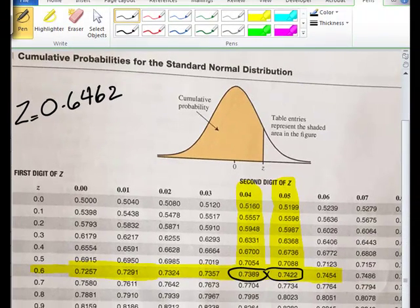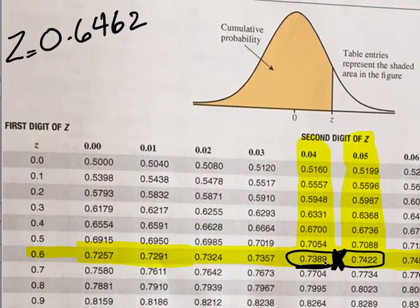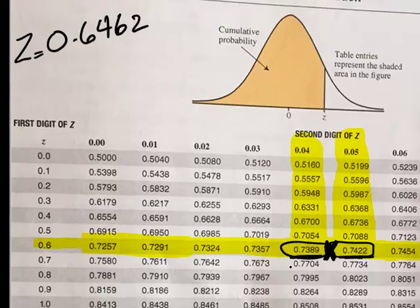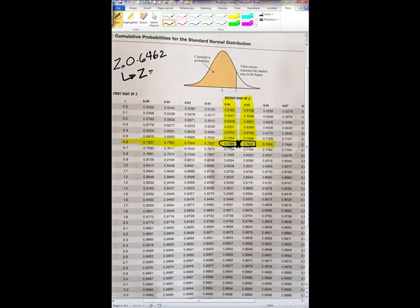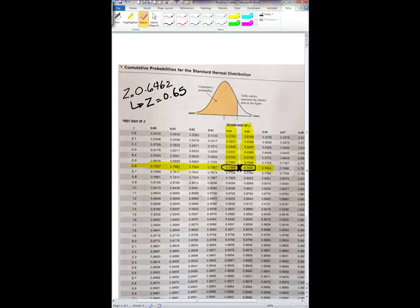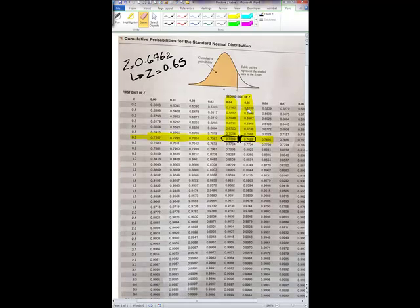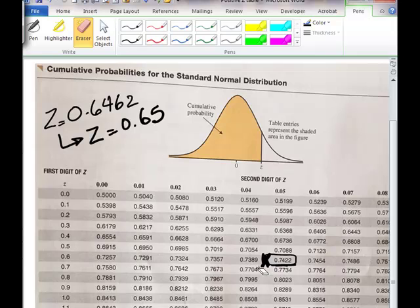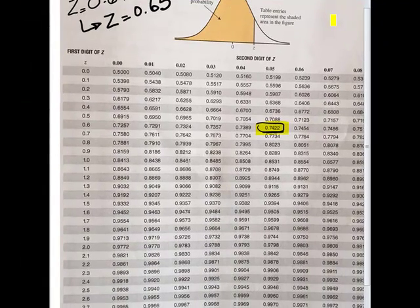So we know that the actual probability that we really are looking for should be somewhere in the middle between these two probability values, between this value and this value. That would require interpolation. So because we're not going to interpolate, I'm just going to use the z-value equal to 0.65. And that would give us this value of 0.7422.